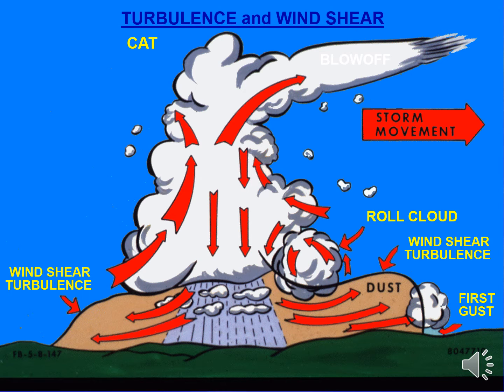Within a thunderstorm, there are strong upward and downward currents of air, both of which create a significant amount of turbulence within the storm. Near the surface, the thunderstorm outflow can produce severe wind shear within a couple thousand feet from the surface. Near the top portions of the thunderstorm, which can be up to 50, 60, or 70,000 feet, there is clear air turbulence, which can affect locations several miles away from the actual thunderstorm.